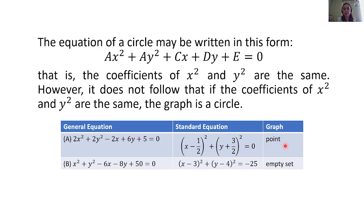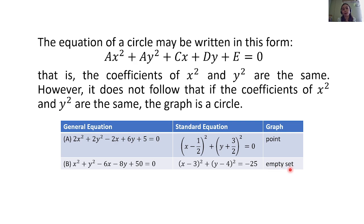Now when we transform this general equation into its standard equation, we get: the quantity of x minus one-half squared plus the quantity of y plus three-halves squared is equal to 0, whose sketch of graph is a single point. For the second example, we have x squared plus y squared minus 6x minus 8y plus 50 is equal to 0 — again the same form, with coefficients both equal to 1.